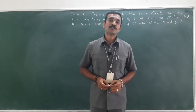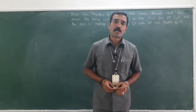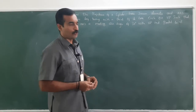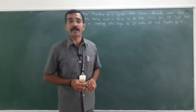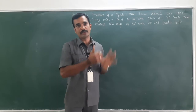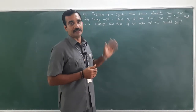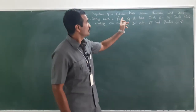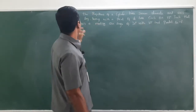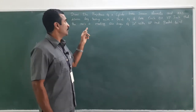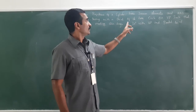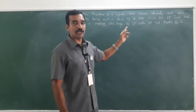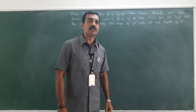Good morning students. For this lecturing video session, I am going to solve a problem from Unit 3, Projections of Solids. Draw the projection of a cylinder whose base is 30 mm diameter and axis 40 mm long, resting with a point of its base circle on VP, such that the axis is making an angle of 30 degrees with VP and parallel to HP.